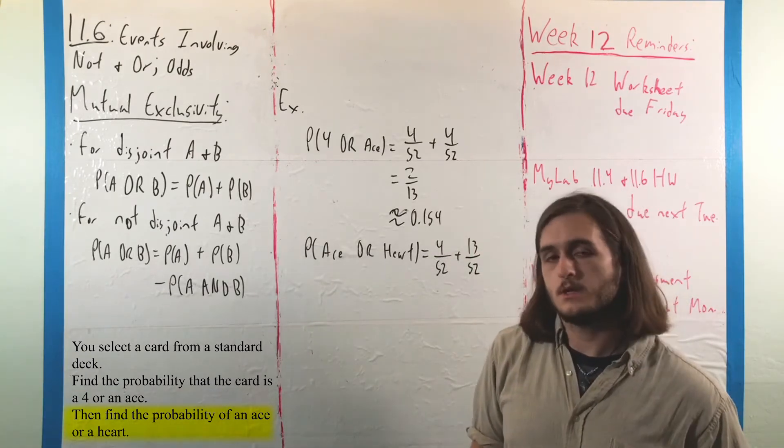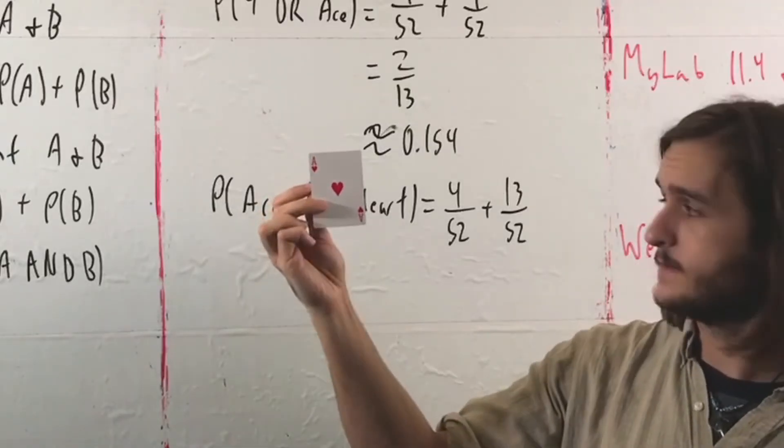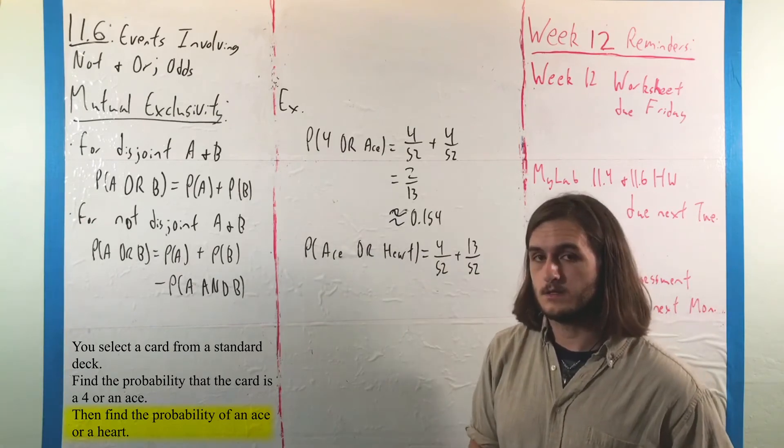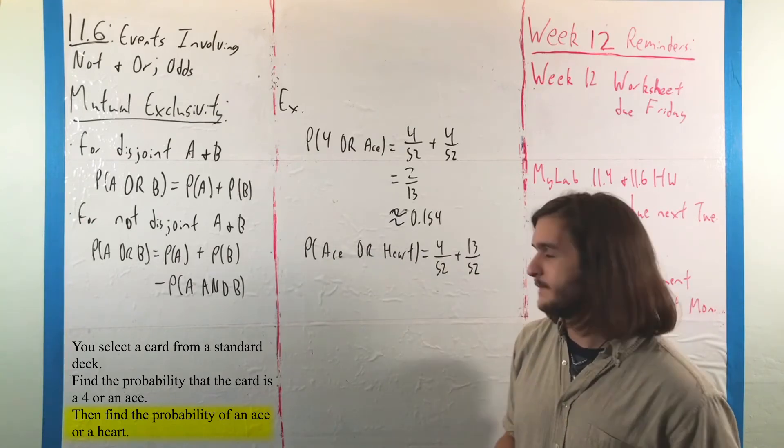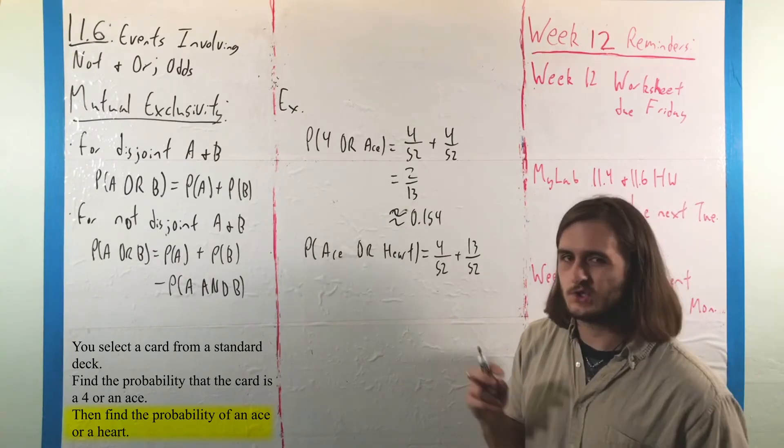But the problem is, when we get our 4 aces, we're going to be counting the ace of hearts. And then when we count our 13 hearts, we still get the ace of hearts. So something's wrong with our picture. In these probabilities, we don't want to have that ace of hearts counted twice.